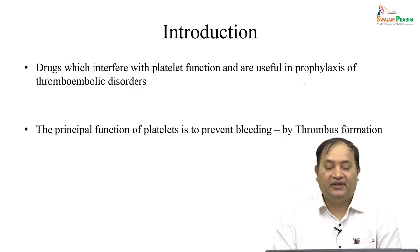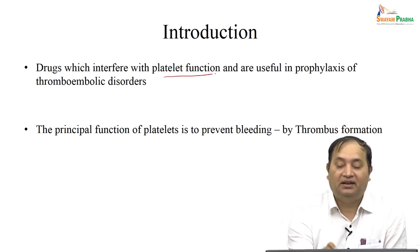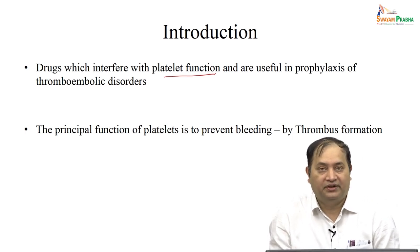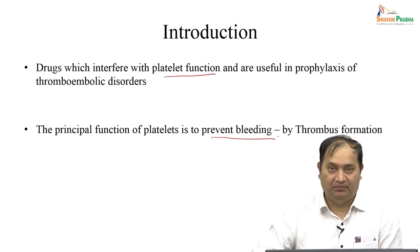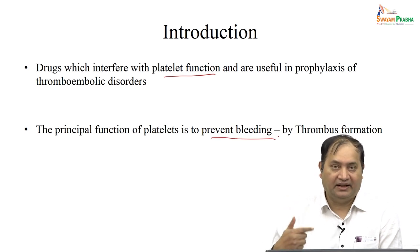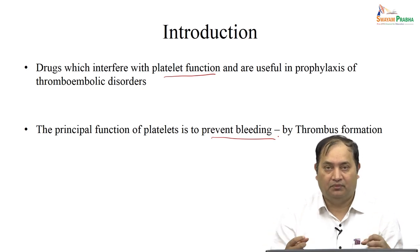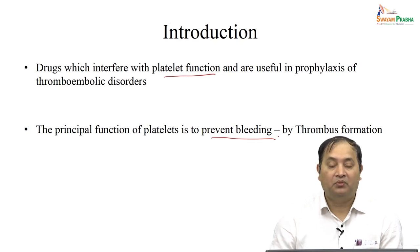Now, what are the drugs? Drugs that act as antiplatelet — those that interfere with platelet functions — we usually use for prophylaxis of thromboembolic disorders. The principal function of platelets is to prevent bleeding. Whenever there is bleeding, platelets get activated and once activated, they ultimately form a thrombus, and that is how bleeding is prevented. So we use blood thinners for prophylaxis in case of thromboembolic phenomenon.